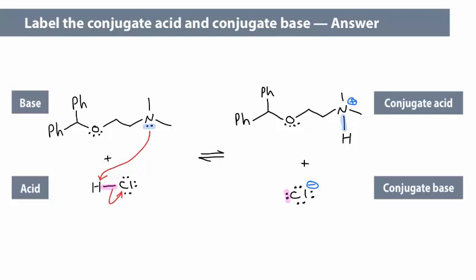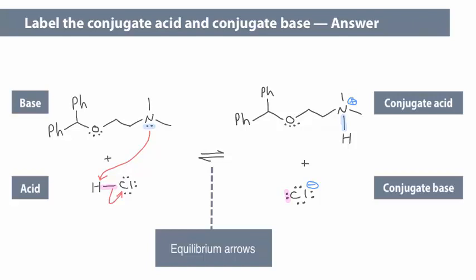Note the equilibrium arrows between the reactants and the products. The species on the right are called the conjugate acid and conjugate base because if you consider the reverse reaction, the ammonium on the top would act as the proton donor, the Bronsted-Lowry acid, and the chloride ion would act as the proton acceptor, the Bronsted-Lowry base, to reform Benadryl and hydrochloric acid.